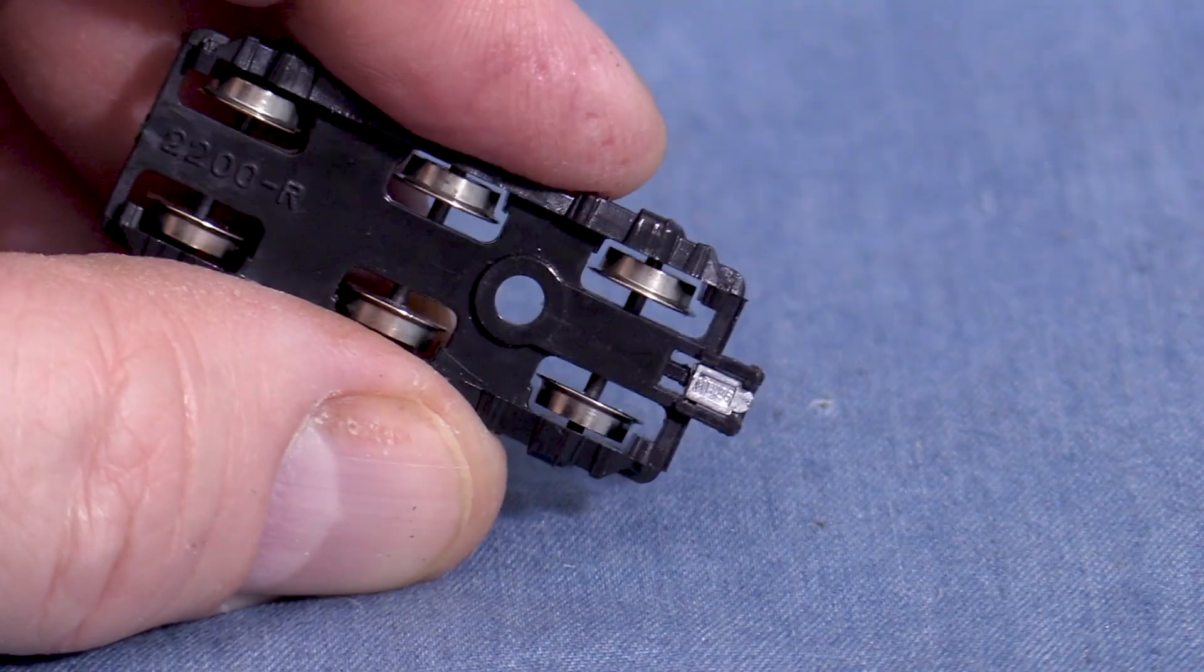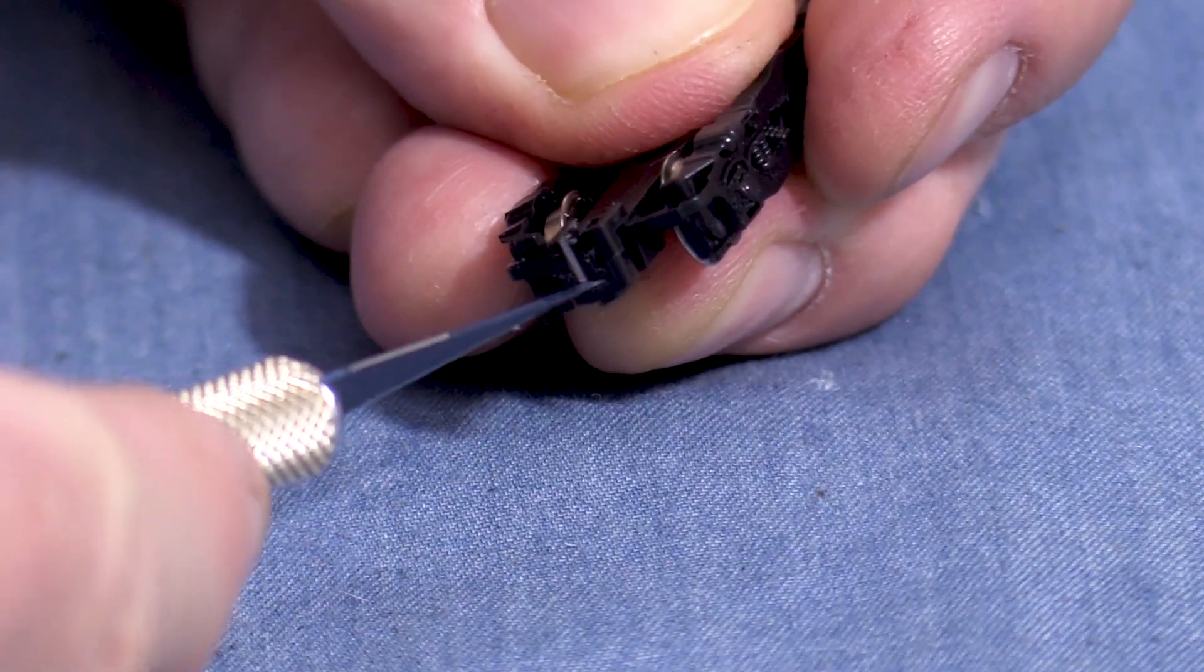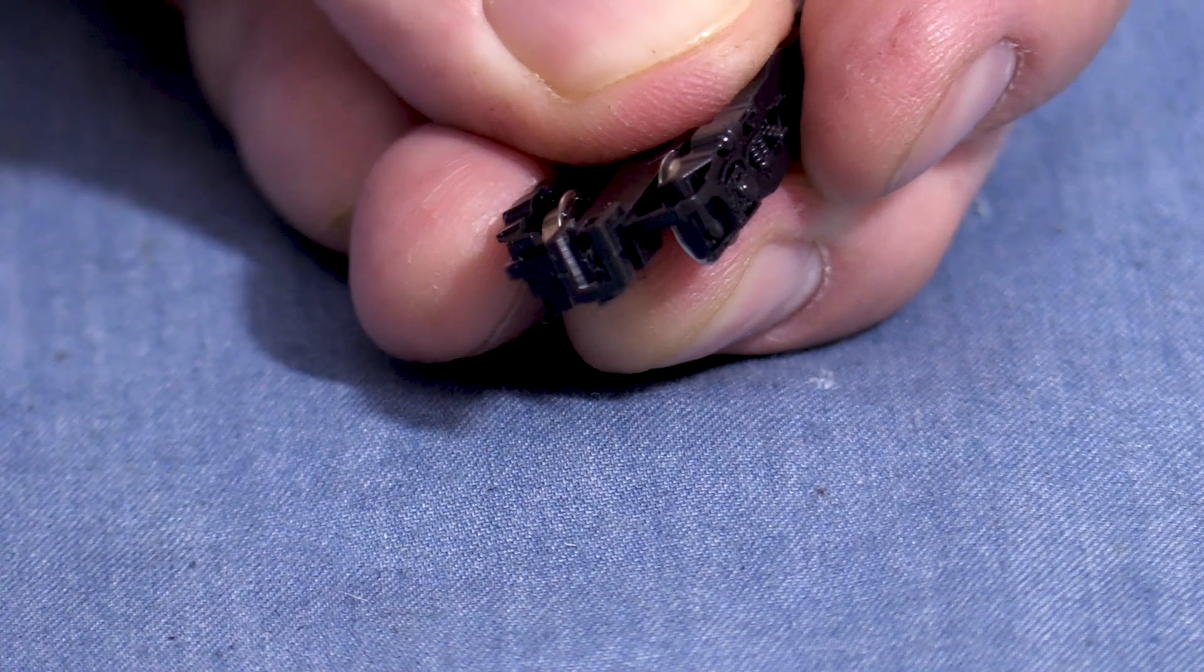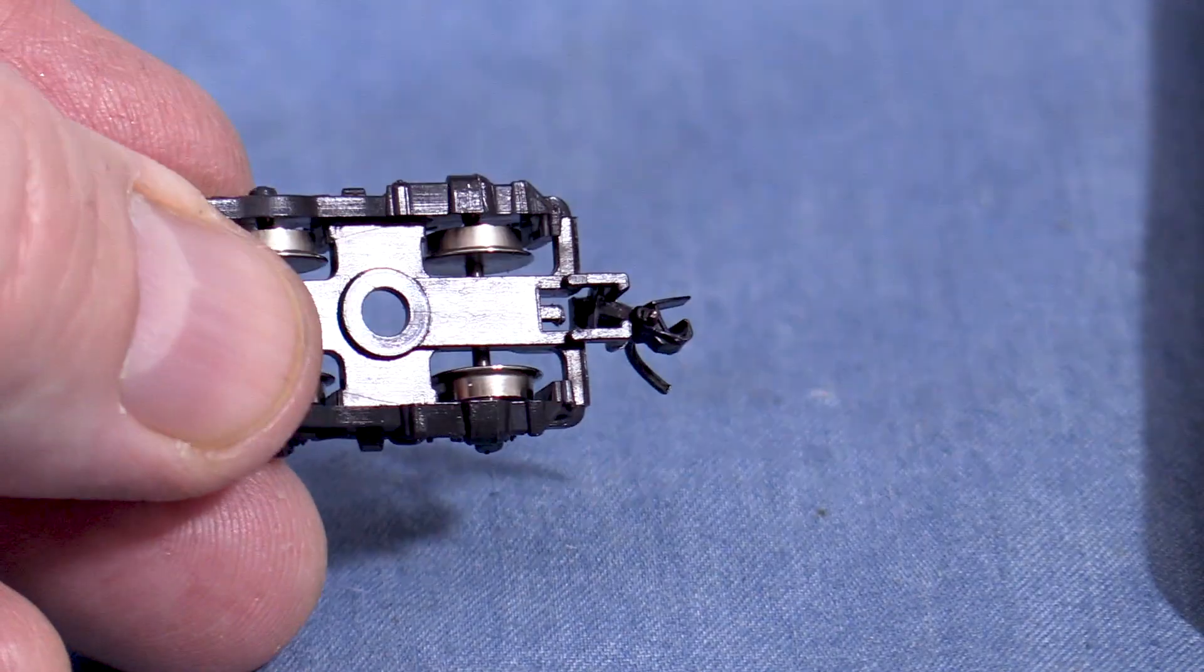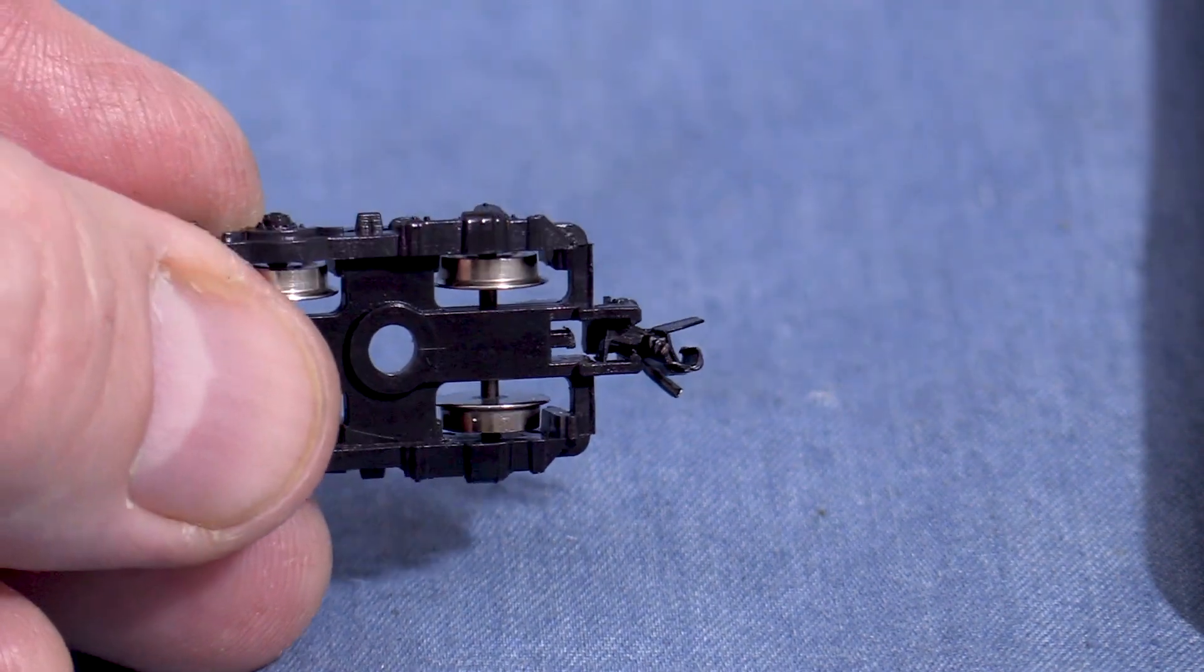With the pin shortened, I can test fit the adapter. It looks good so far. The instructions say to bevel the opening slightly. I'm scraping the edges with an exacto knife. Putting all this together is tricky. I'll start by inserting the two pieces of coupler. I had to turn them 90 degrees to get them in there.